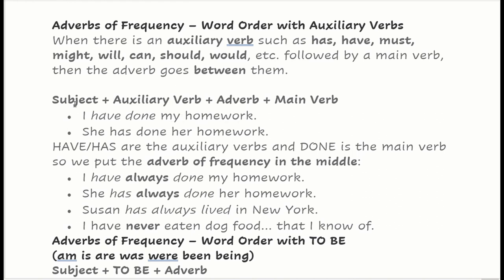The adverb goes after the auxiliary verb and before the main verb. I have always done my homework. She has always done her homework. Suzanne has always lived in New York. I have never eaten dog food — never goes between the auxiliary verb and the main verb.